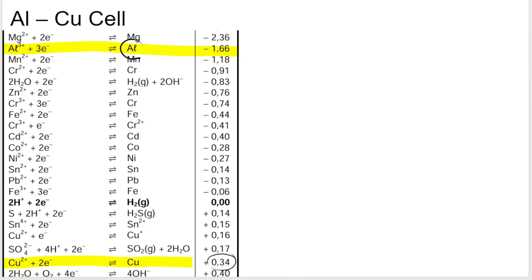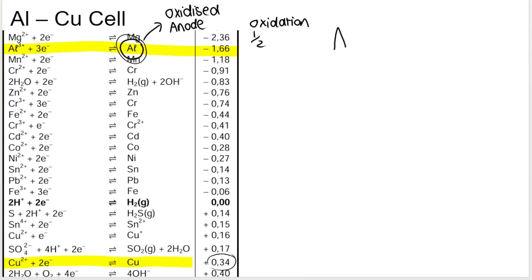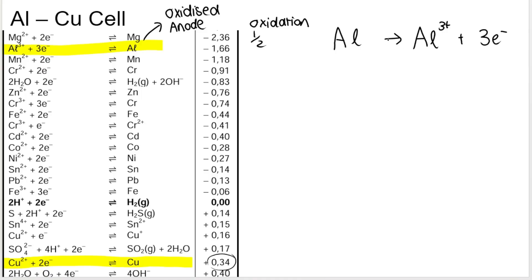Aluminium is higher up on the table, so it is oxidized — this makes aluminium the anode. The oxidation half reaction is read from right to left: Al → Al³⁺ + 3e⁻. Write everything on the right-hand side first, then the left-hand side, always using a single arrow. Then we have our reduction half reaction, which is further down the table: Cu²⁺ + 2e⁻ → Cu, written normally from left to right.